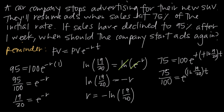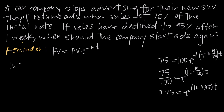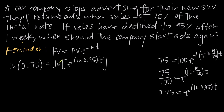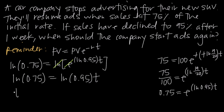Simplifying both fractions: 75 over 100 becomes 0.75, and 19 over 20 becomes 0.95, so we have 0.75 equals e to the natural log of 0.95 times t. Taking the natural log of both sides gives natural log of 0.75 equals natural log of e to the natural log of 0.95 times t. The natural log cancels with the exponential function, leaving natural log of 0.75 equals natural log of 0.95 multiplied by t.